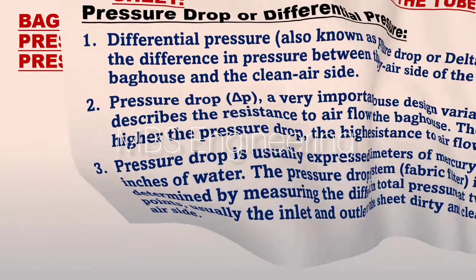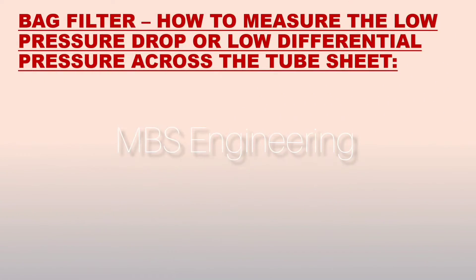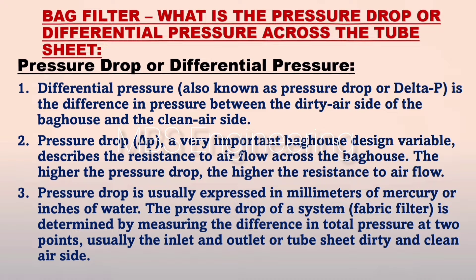Point number 3: pressure drop is usually expressed in millimeters of mercury or inches of water. The pressure drop of a system — fabric filter — is determined by measuring the difference in total pressure at two points, usually the inlet and outlet, or tube sheet dirty and clean air side.